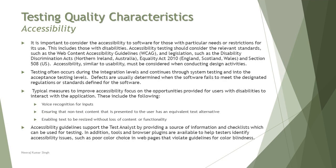Accessibility generally means ease of access, particularly for specially-abled or differently-abled users who want to access your product. Certain applications are built specifically for such users. In the physical world, you see braille engraved in elevators, museums, and visiting places for blind people. In software, examples include magnifiers, on-screen keyboards, sticky keys, hotkeys combinations on Windows — these are all accessibility options that allow users to access the product with ease.